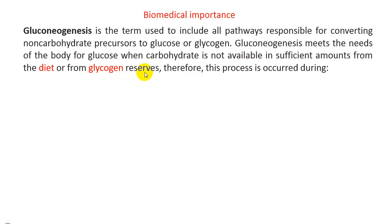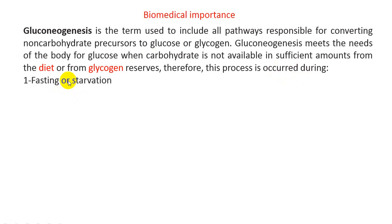Gluconeogenesis meets the needs of the body for glucose when carbohydrate is not available in sufficient amounts from diet or glycogenesis reserves. This process occurs when we don't have enough glucose from the GI system or from the storage form glycogen. The first case is during fasting or starvation, when we don't have enough carbohydrate reaching the stomach, leading to depletion of the storage form of carbohydrate as glycogen.